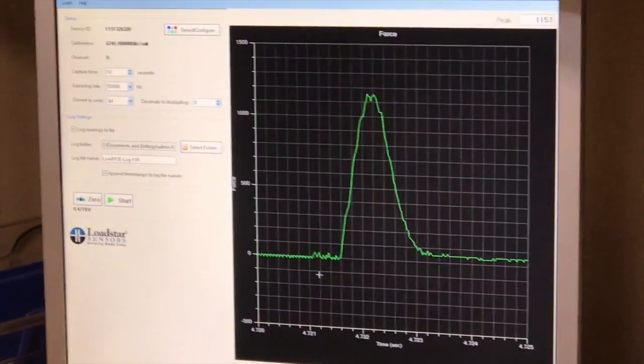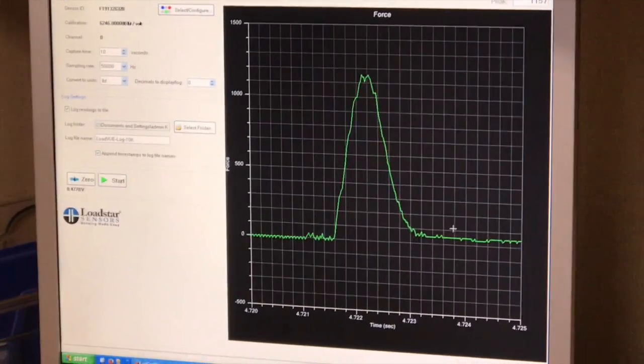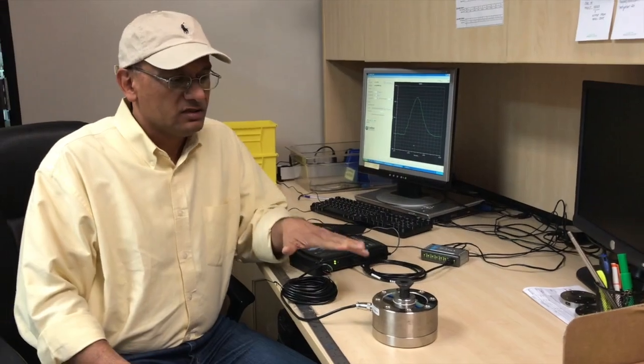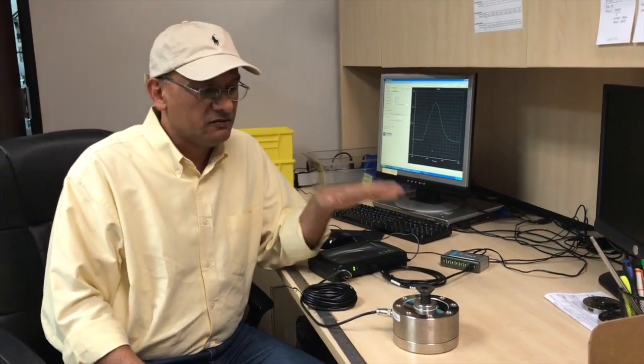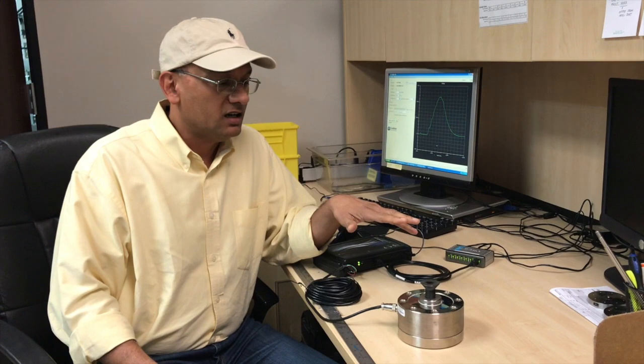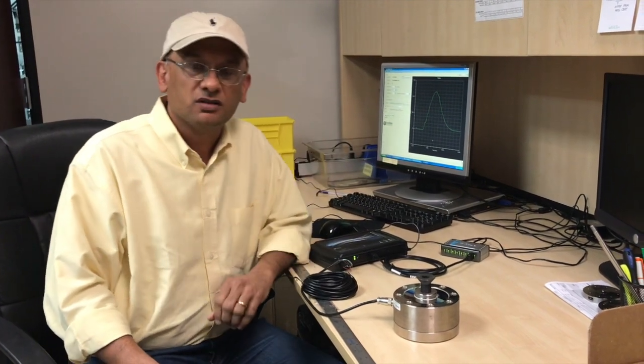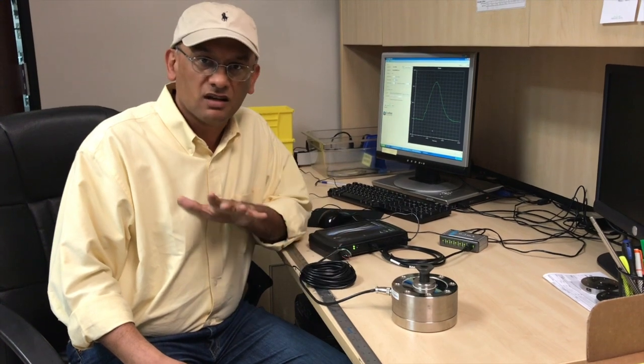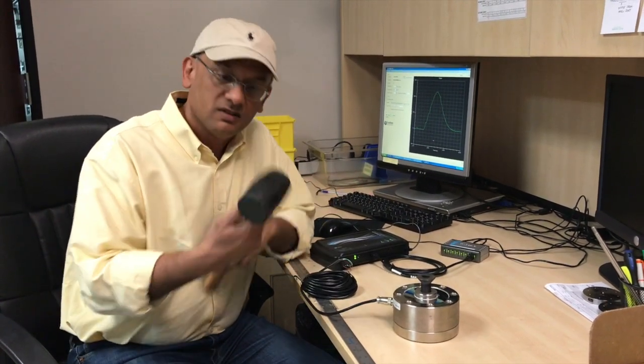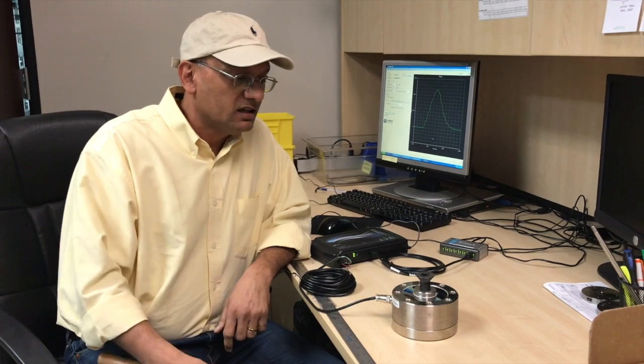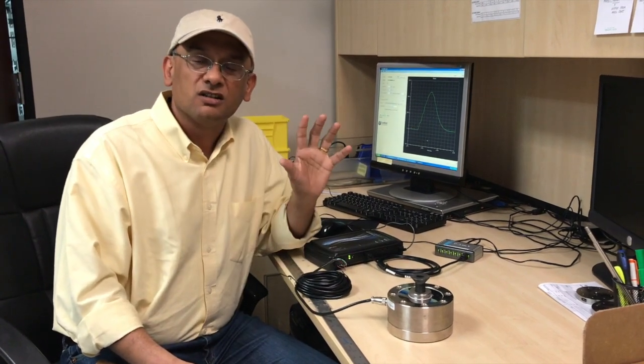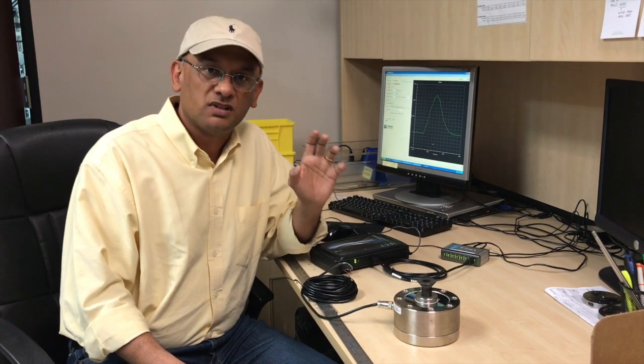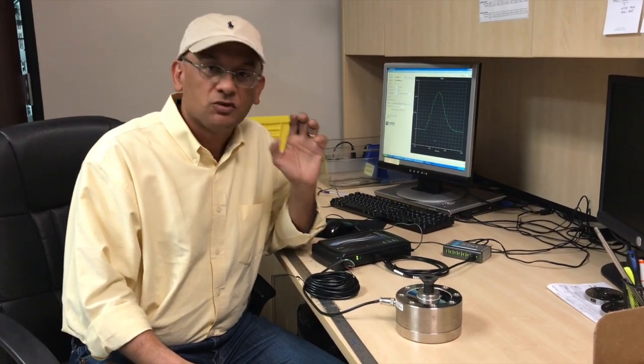In the previous test we did five hits and we saw what the impact forces look like. Here we'll do just one hit with as much force as I can possibly muster with this rubber mallet, and then we'll do it in slow-mo and then take a look to see if we can get a nice good force versus time capture of the data.